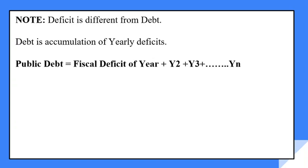Please note that deficit is different from debt. Deficit is 'ghata' and debt is 'karza.' Debt is the accumulation of yearly deficits. All the borrowings the government has made over the previous years, when combined together, form what we call public debt. So public debt is basically the consolidation of all the debts taken in past years — and it is different from the deficit.